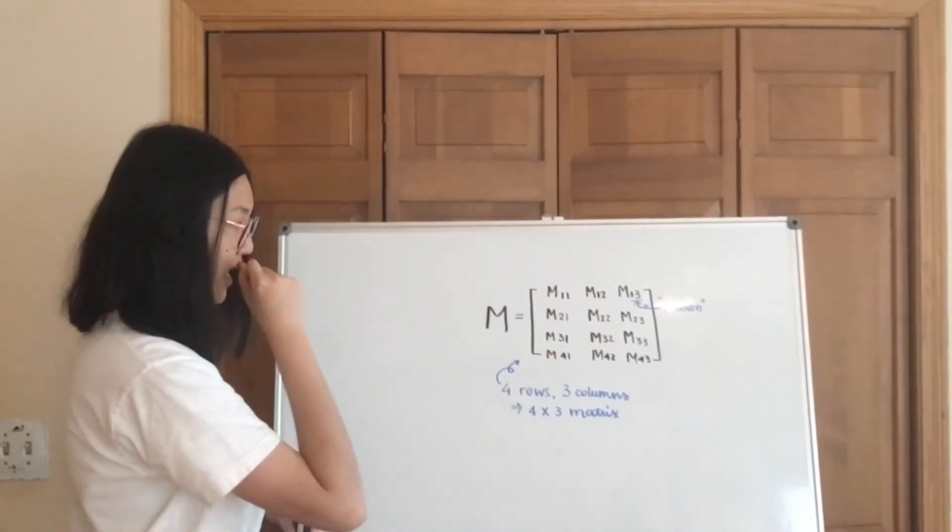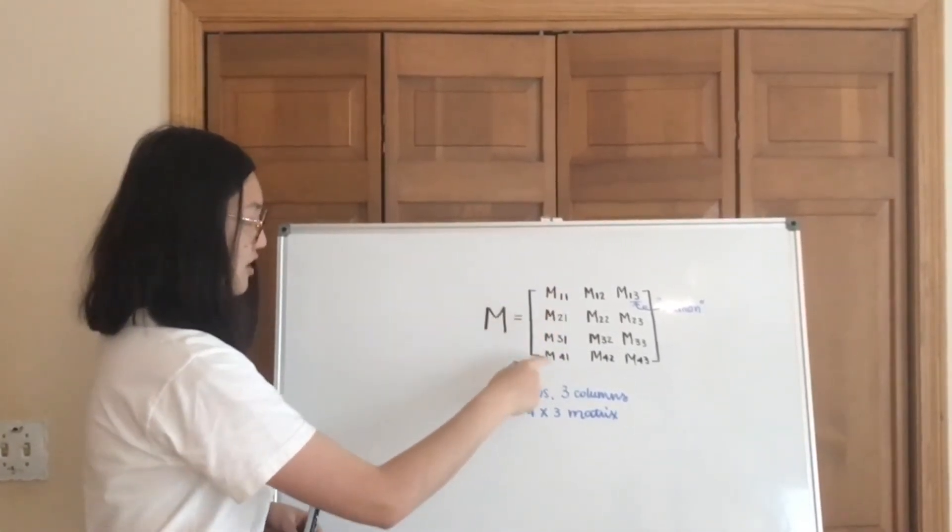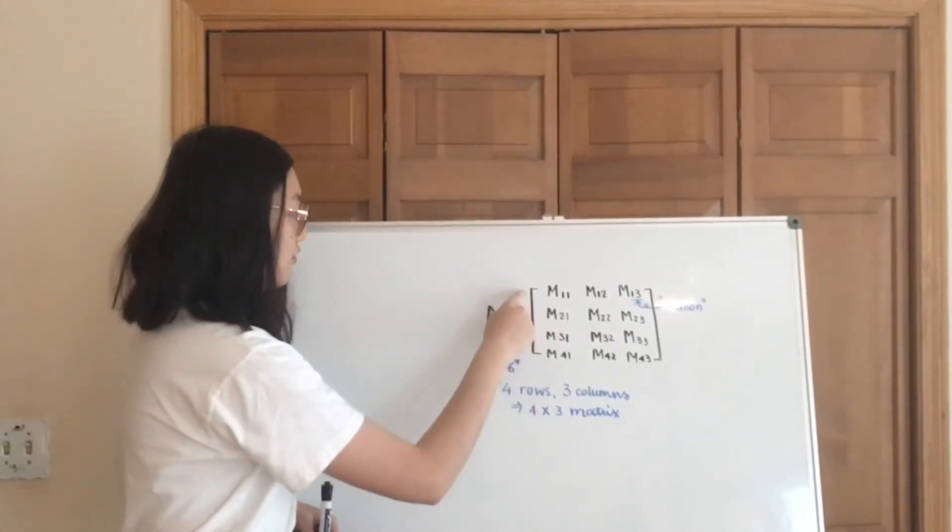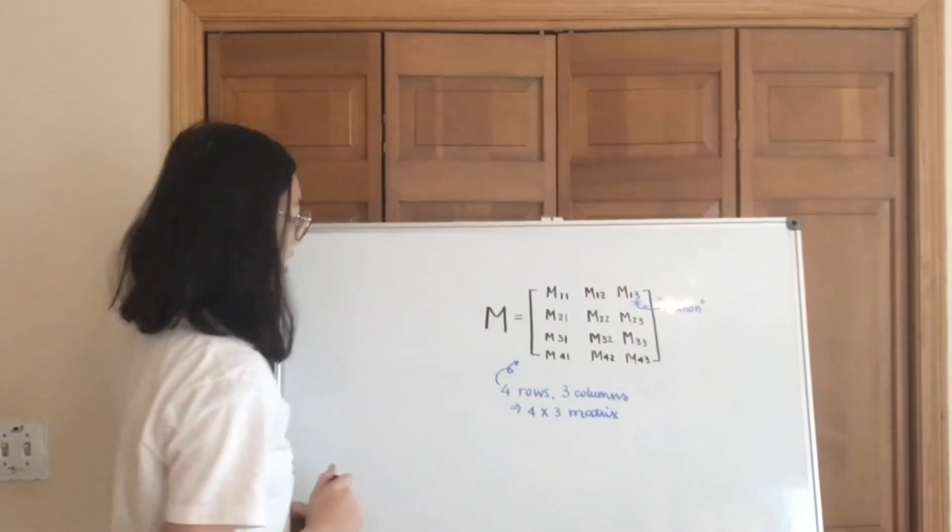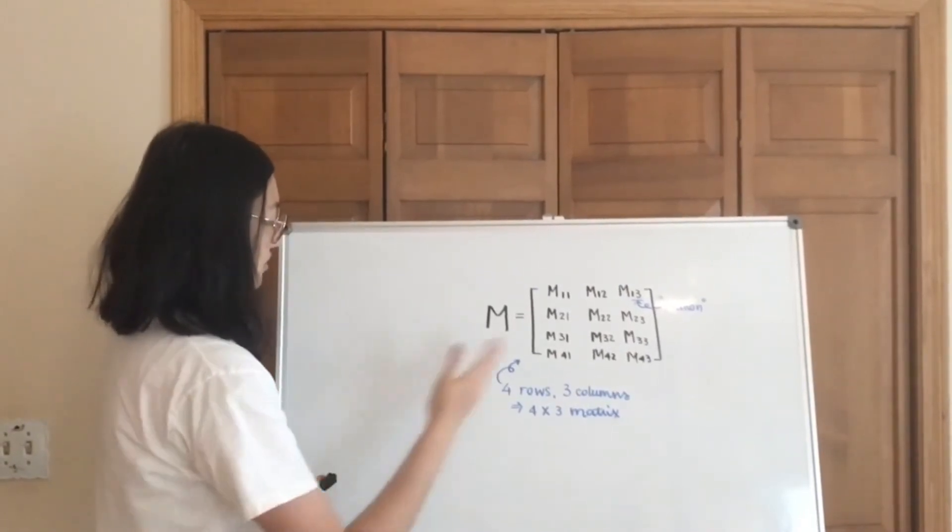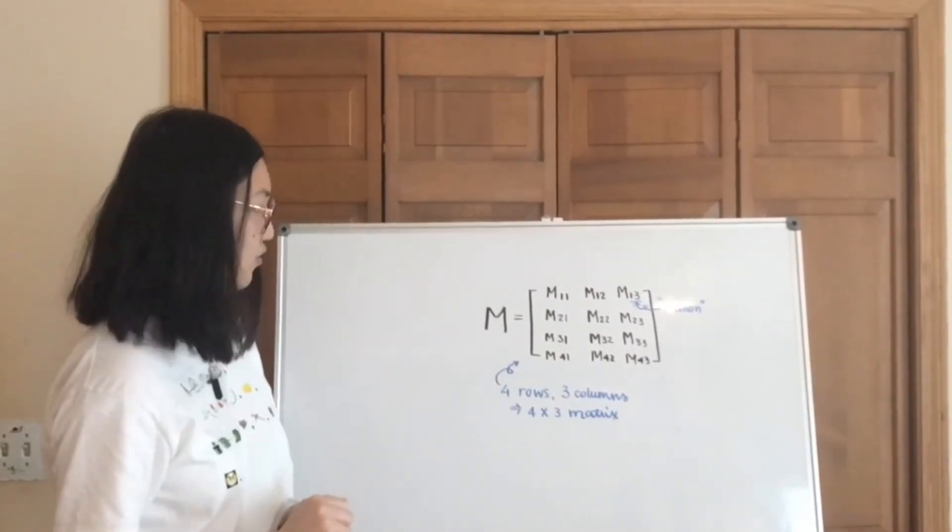So if we do that, we can see that there are, for example in this one, 4 rows and 3 columns. So in that case, this is a 4 by 3 matrix.